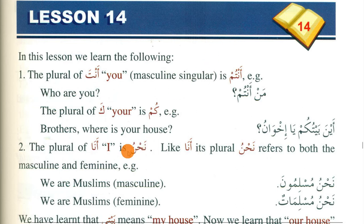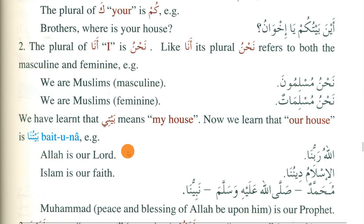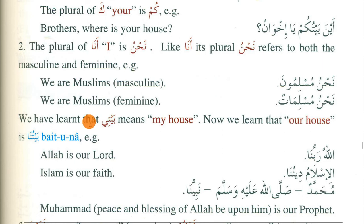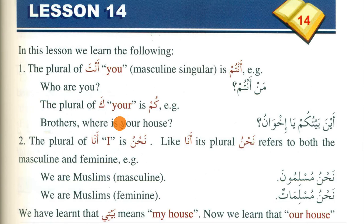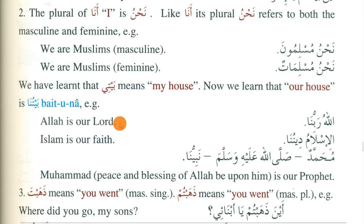There are three plural forms here that you need to memorize. Similarly, 'ya' means 'my' — for example, 'bayti' means 'my house', and the plural of this pronoun is 'naa' — 'baytuna'. So you need to memorize these four plural forms. It is a reading exercise, so you will read point number one and point number two and memorize the plural forms.